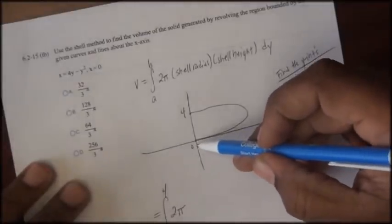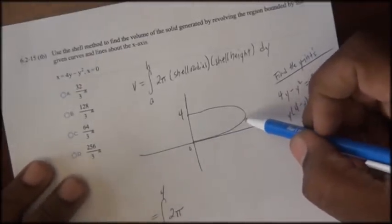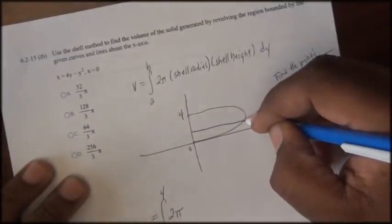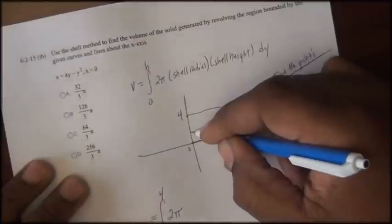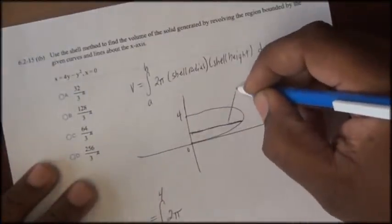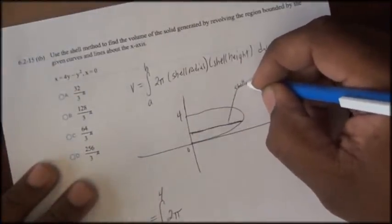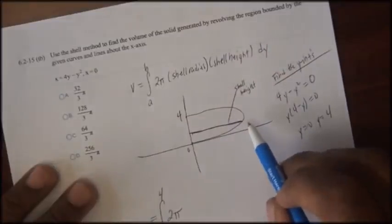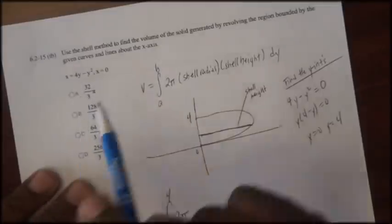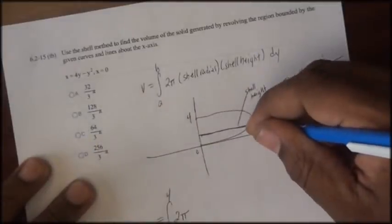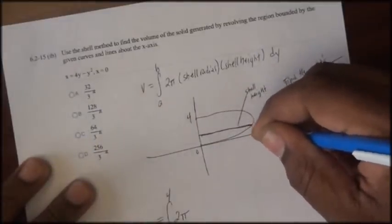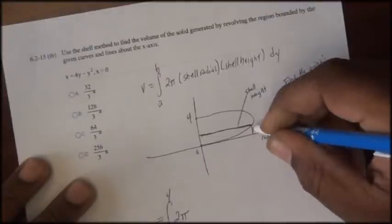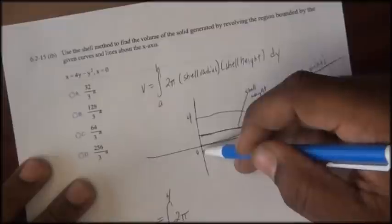In order to determine the shell's radius and the shell's height, I'll next draw a cross-section parallel to the axis of revolution. Since we're revolving this figure about the x-axis, I'll simply draw a parallel line to the x-axis. This serves as the shell's height, and the shell's height is given by the function. I'll also sketch out the shell's radius, and the shell's radius is dependent upon the y variable.